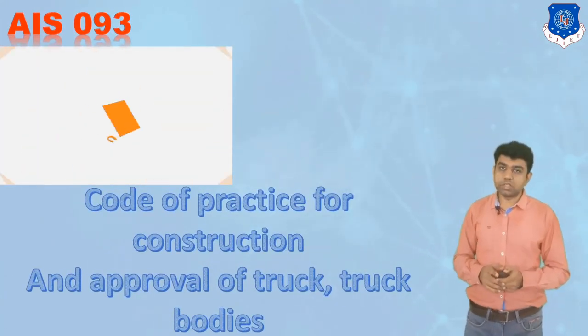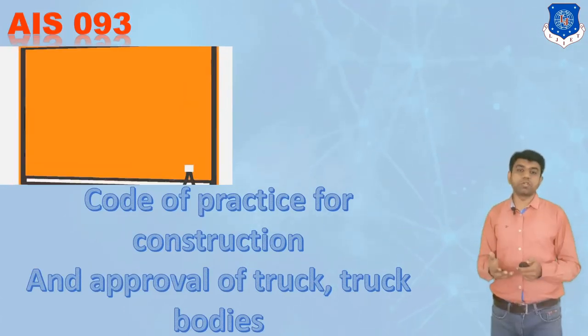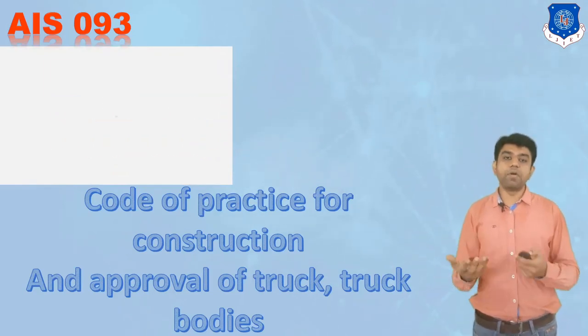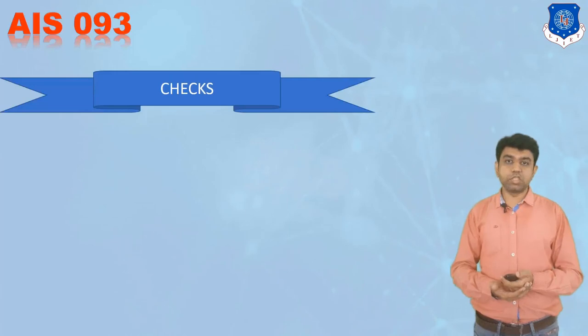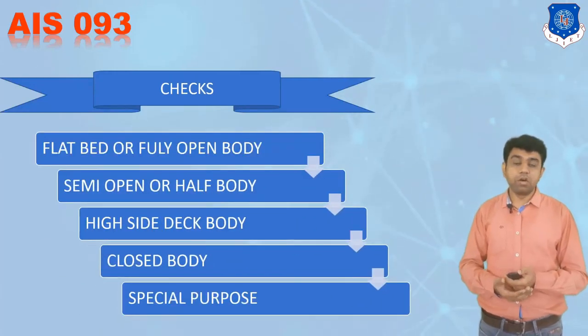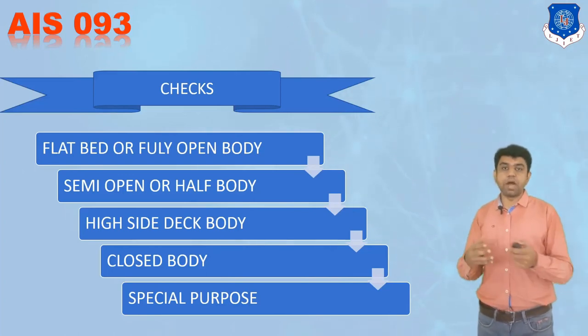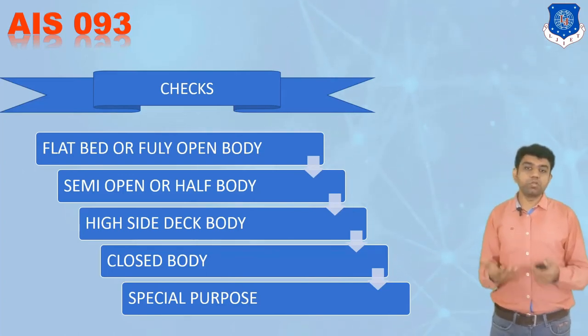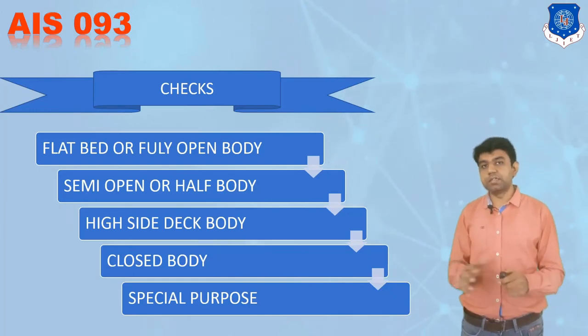The last standard is AIS 093, which is the code of practice for the construction and approval of trucks and truck bodies. The checks specified include flat or fully open body trucks, semi-open or half-body high-side deck bodies, closed body trucks, and special purpose trucks — all evaluated under AIS 093 norms. That concludes our discussion of the six AIS standards. Thanks for watching.